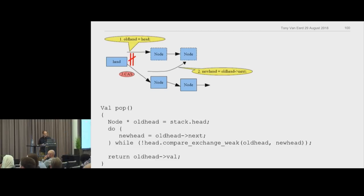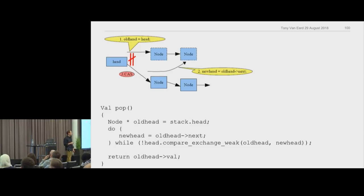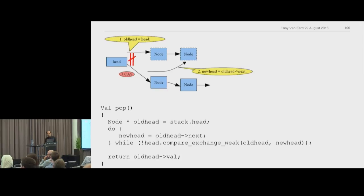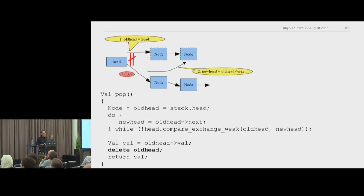We have a bug beyond reading old head when it could be deleted. Anyone know the other bug? We forgot to delete old head. We allocated in push — we must delete in pop. Now that we actually delete these nodes, it's even worse because we want to walk across memory we've deleted. And there's another problem: what if we're all set up — new head ready, old head pointing where it should — and then that node gets popped by someone else?